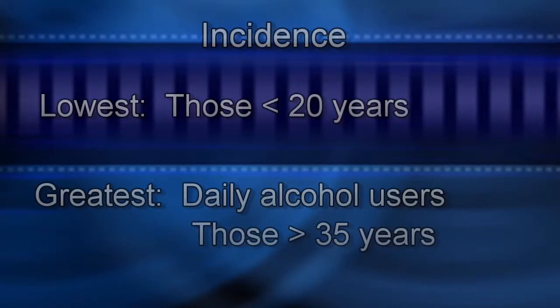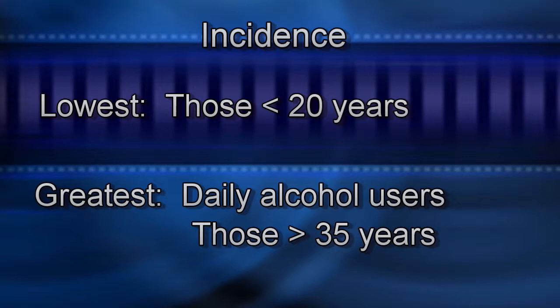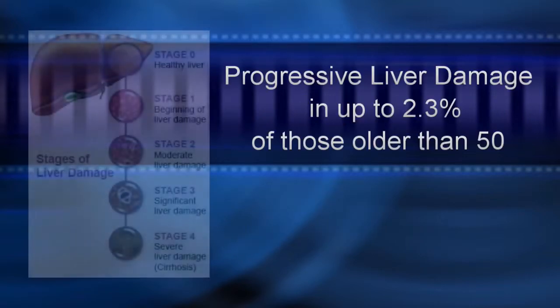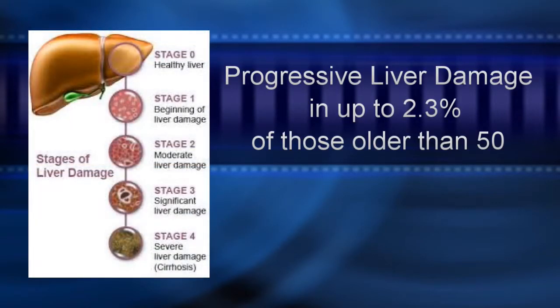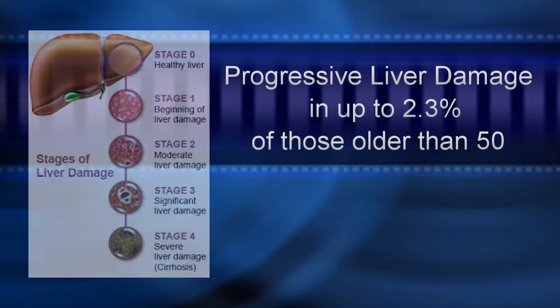Good afternoon, I'm Julia, and I'm Kushbu. Thank you for joining us today. In light of recent events, we're investigating the drug isoniazid, one of the main drugs used to treat tuberculosis. The incidence of isoniazid-associated hepatitis is lowest in patients younger than 20 years of age and greatest in daily alcohol users and patients 35 and older. The manufacturer states that progressive liver damage may occur in up to 2.3% of patients older than 50, and some studies suggest it may be more.